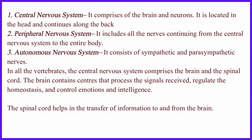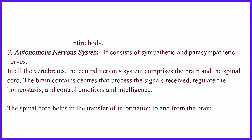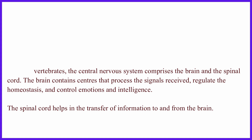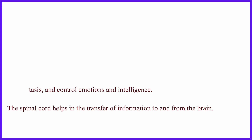In all vertebrates, the central nervous system comprises the brain and the spinal cord. The brain contains centers that process the signals received, regulate homeostasis, and control emotions and intelligence. The spinal cord helps in the transfer of information to and from the brain.